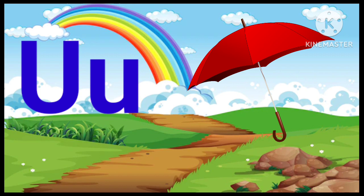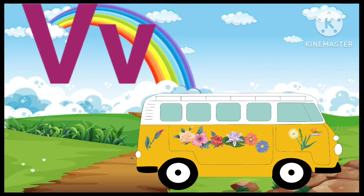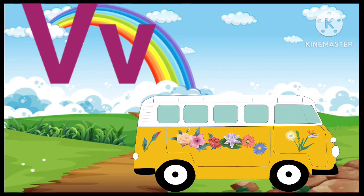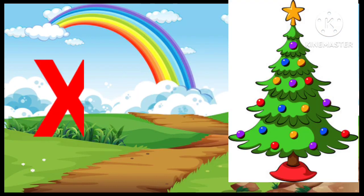U. U for Umbrella. V. V for Van. W. W for Watermelon. X. X for Xmas Tree.